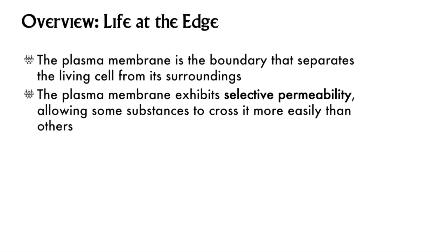Membranes act as boundaries between cells and within cells. Every cell has a plasma membrane that is considered the line between inside and outside the cell. The plasma membrane, like all membranes in the cell, is selectively permeable. Some things can cross the barrier easily, some with the input of energy, and others not at all.